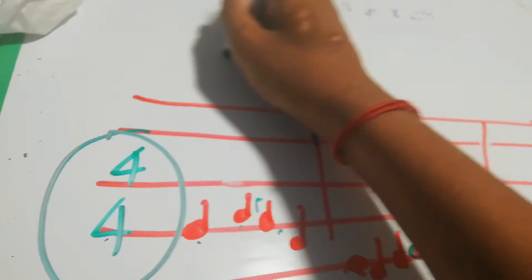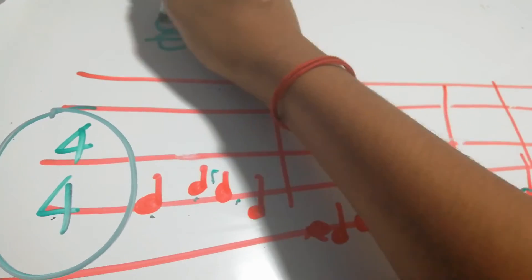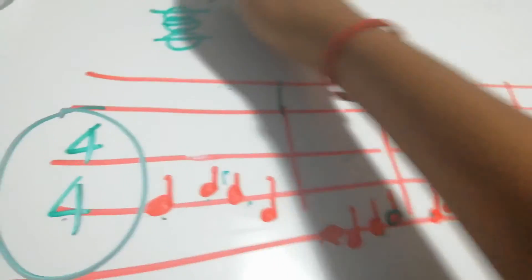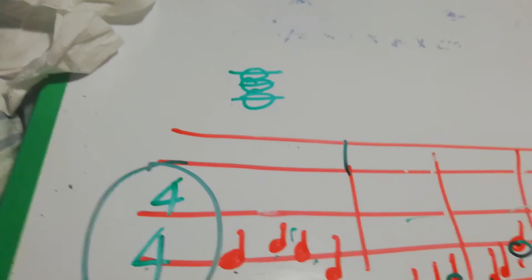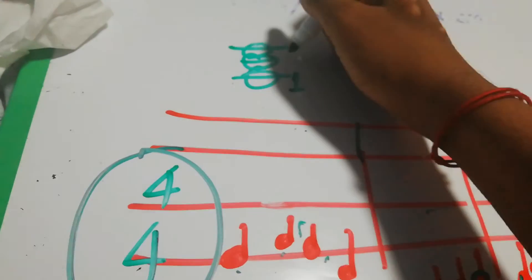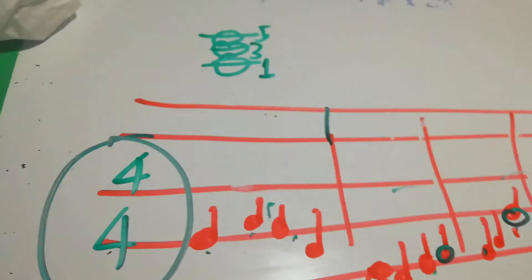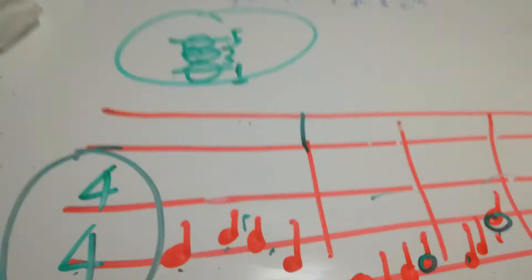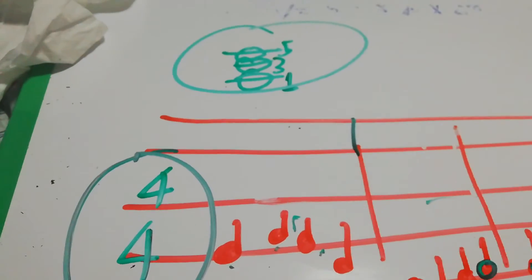It would use something like this. This is what we call a closed structure which uses the first, third, and fifth intervals. This is what makes any chord: first, third, and fifth intervals.